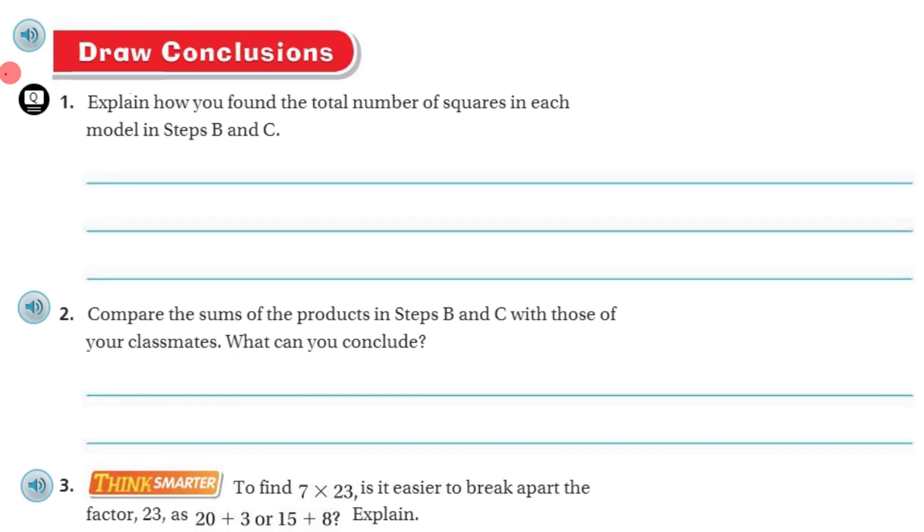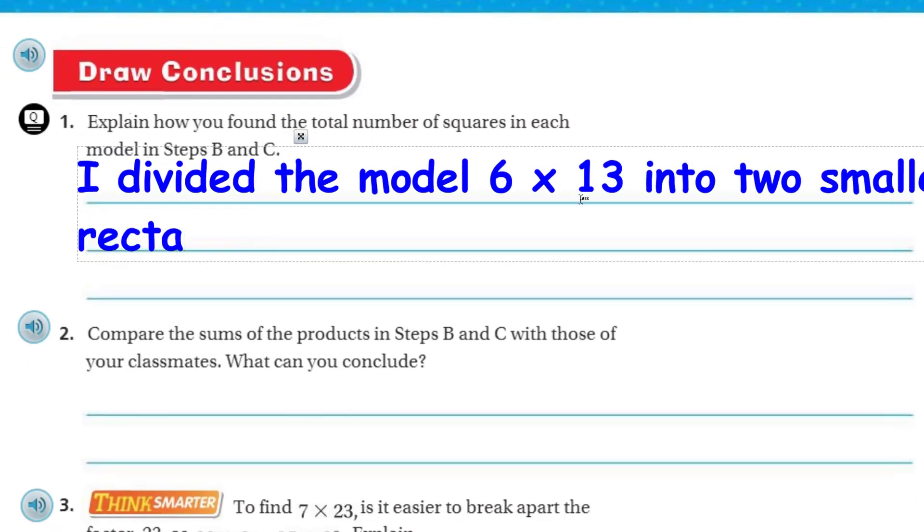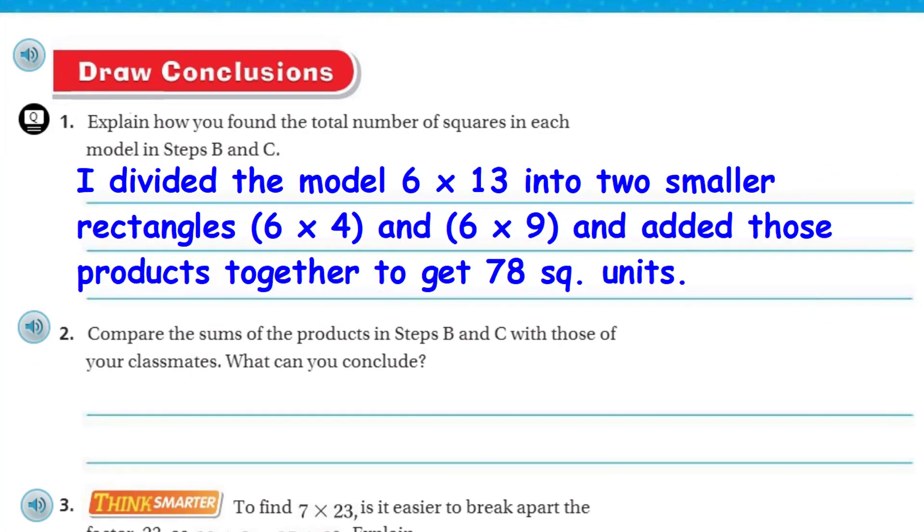Now, let's go to the next page. You see, now they want us to start drawing some conclusions. And it says, explain how you found the total number of squares in each model in steps B and C. Well, I'm just going to say it, and then I'll type my answer in. But I would say, first of all, I just simply broke 13 into two smaller numbers that had a sum of 13. And I'll use the second model, which was where I took the 9 and the 4. So I broke 13 into 9 and 4, two smaller rectangles. And then I simply multiplied each addend by the number 6. Finally, I added the products. And they're actually called partial products.